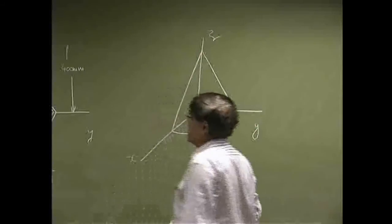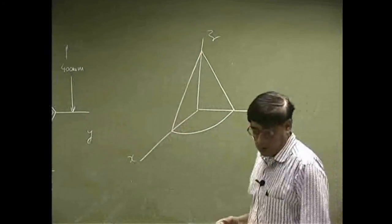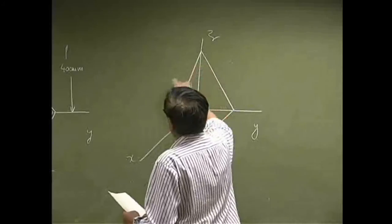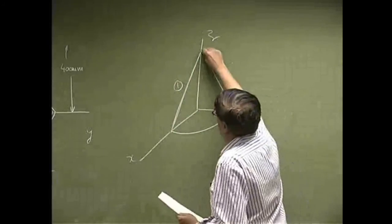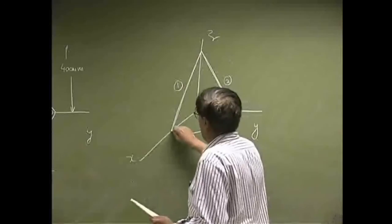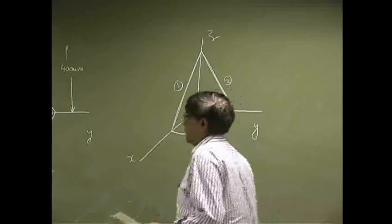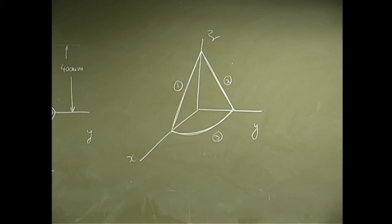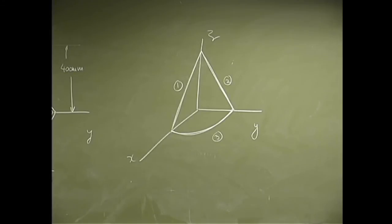This is x, y and z, and you could think of this as three different wires. You could take this one here as wire number 1. I could take this and call this as wire number 2. And then I could take this and call this as wire number 3. We can think of this whole assembly as three distinct wires.